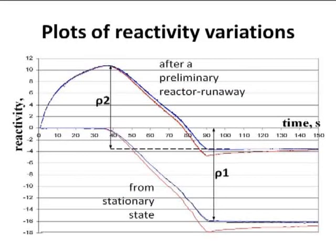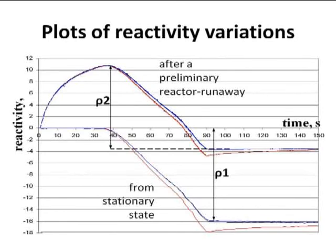In the operating reactor, control rods actuate in the case of reactor runaway. However, the efficiency of a control rod is calculated for the stationary state. In this figure, we can see a plot of reactivity variations for a standard method of control rod efficiency measurements for two experiments: a control rod starting to move from a stationary state, and a control rod starting to move after a prior reactor runaway. As a result, we have differences in reactivity estimates of more than 5%, because the reactor has different asymptotics for these two cases. Experiments on the big physical tests of the IPPE confirmed these results.